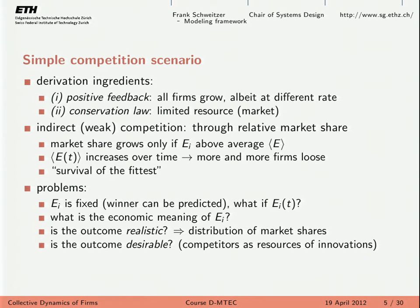Today we address problem number two: the economic meaning of fitness. Next lecture we discuss the realistic outcome, where we observe a skewed distribution of market shares and try to understand which models produce that distribution. The last question about desirability is not discussed here, but lectures on innovation and management cover more about the relationship between a firm and its competitors.